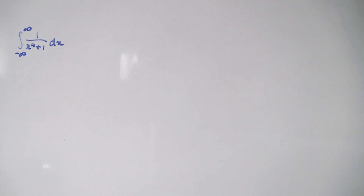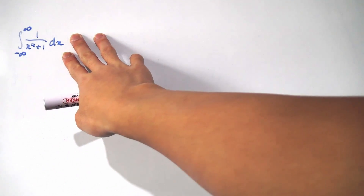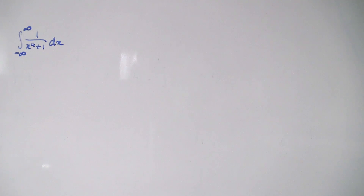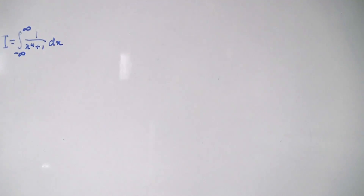Hello everybody, and today we're going to be calculating the integral of 1 over x to the 4th power plus 1 over the real numbers. We're going to be using some contour integration for this, so let's dive right in. First of all, let's call this integral I, just so we know what we're solving later on.